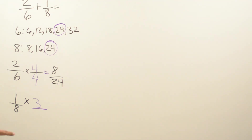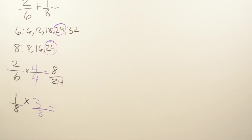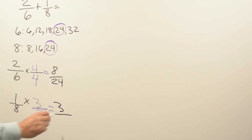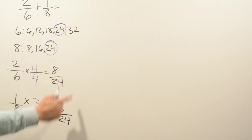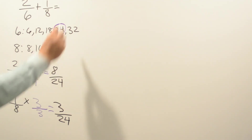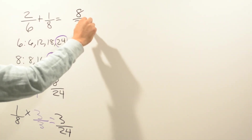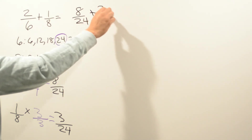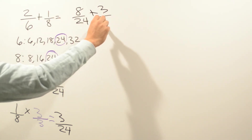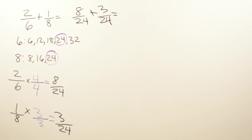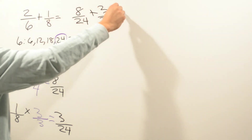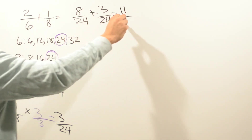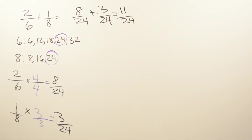Now for one-eighth: how many times do we multiply 8 to get to 24? One, two, three — so we multiply by 3. Whatever we do on top we do on the bottom. So 1 times 3 is 3, and 8 times 3 is 24. Now we add: 8/24 plus 3/24. Eight plus 3 is 11, and we leave the denominator as 24. We can't simplify, so the answer is eleven over twenty-four.